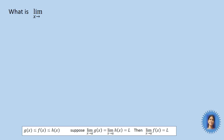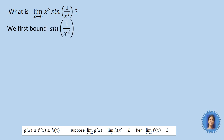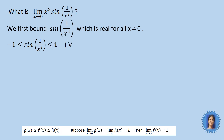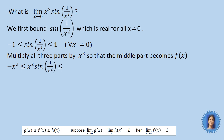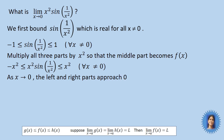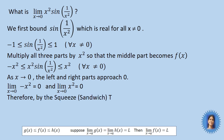Coming to the other question mentioned at the beginning: what is the limit as x tends to 0 of x² sin(1/x²)? We first bound sin(1/x²), which is real for all x ≠ 0, between -1 and 1: -1 ≤ sin(1/x²) ≤ 1 for all x ≠ 0. We multiply all three parts by x² so the middle part becomes x² sin(1/x²): -x² ≤ x² sin(1/x²) ≤ x². As x tends to 0, the left part and right part both approach 0. Therefore, by the squeeze theorem, the middle part F(x) is forced to approach 0. So, limit as x→0 of x² sin(1/x²) is equal to 0.